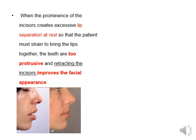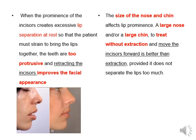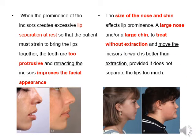When the prominence of the incisors creates excessive lip separation at rest and the patient must strain to bring the lips together, the teeth are too protrusive and retracting incisors in this case improves facial appearance. The size of the nose and chin affects lip prominence. When a large nose or large chin is present, treating without extraction and moving the incisor forward may be better, provided it does not separate the lips too much.